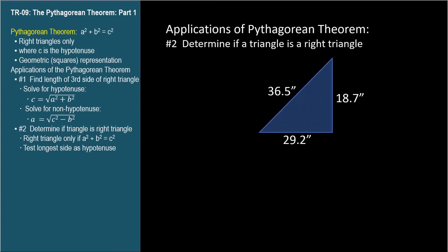If we're told that the lengths of a triangle's sides are 18.7 meters, 29.2 meters, and 36.5 meters, is it a right triangle?